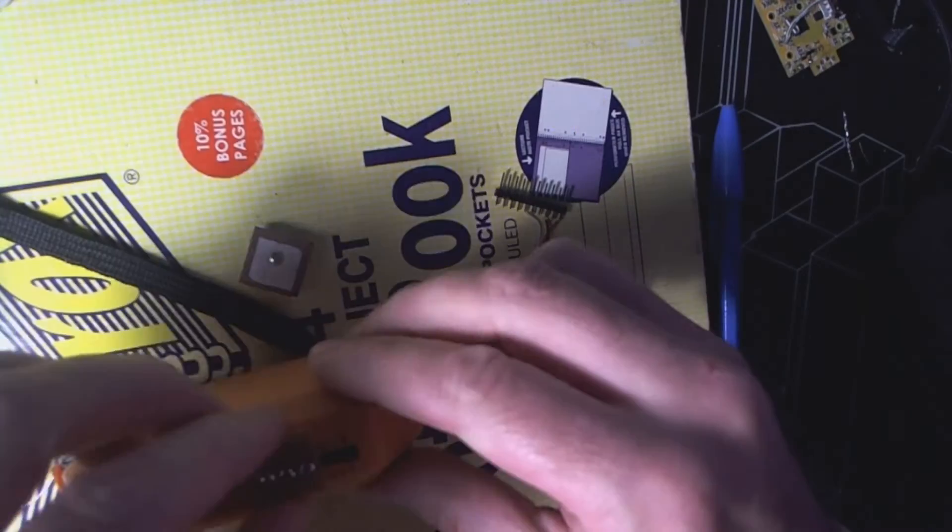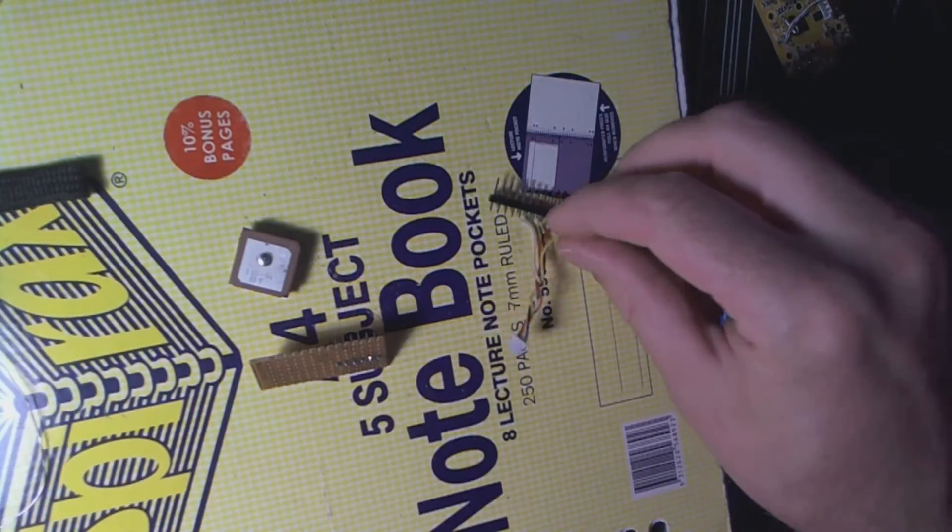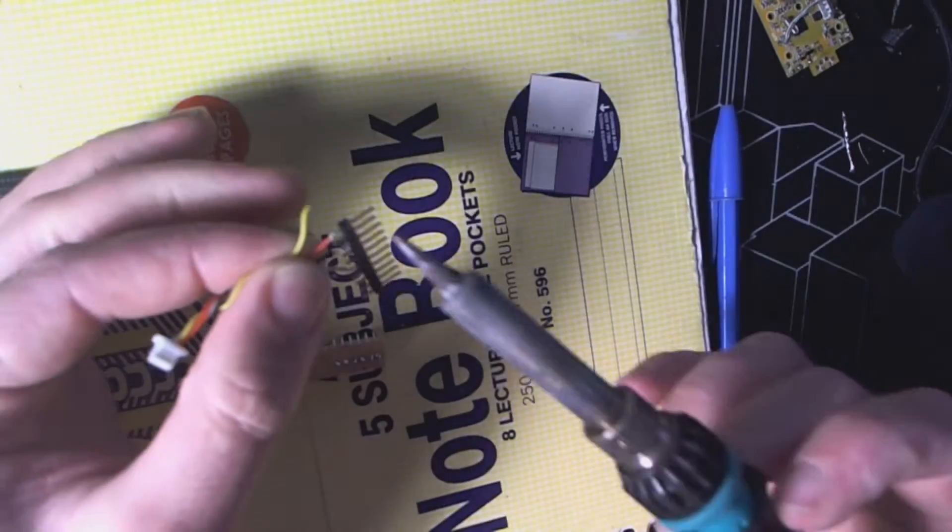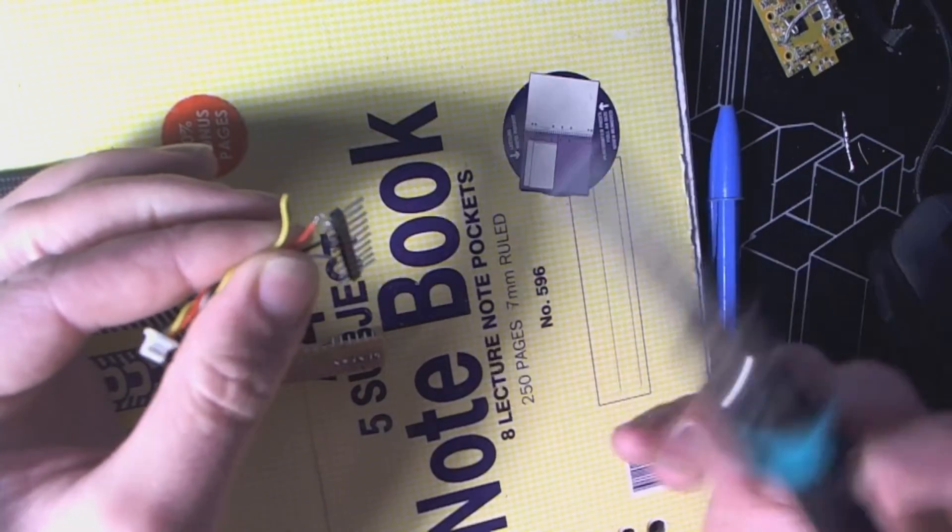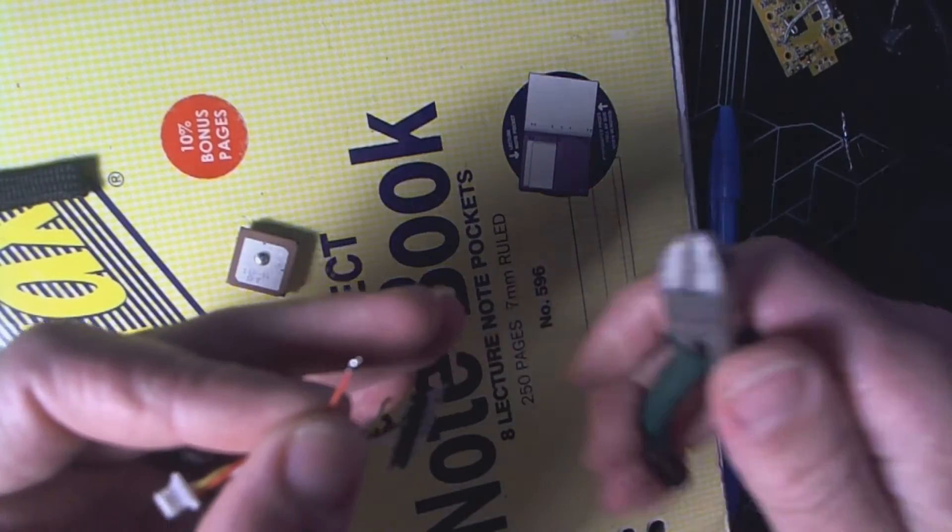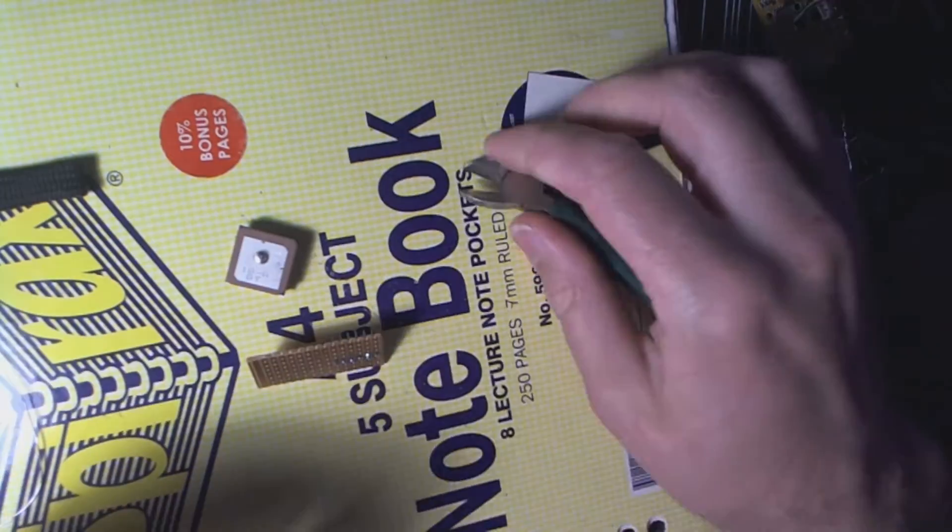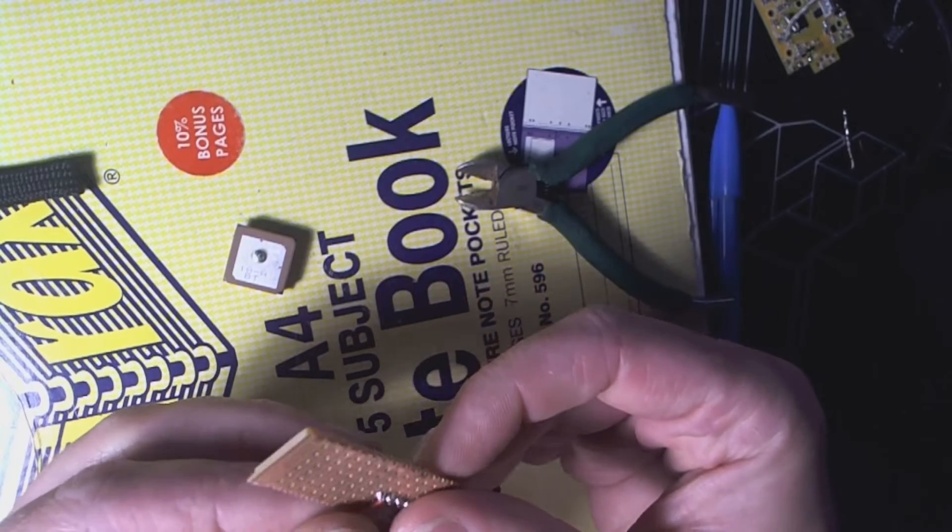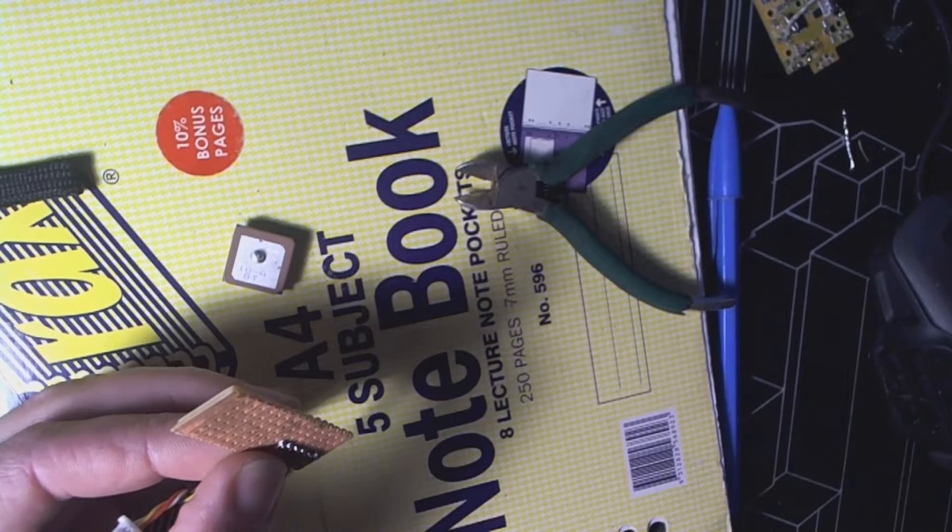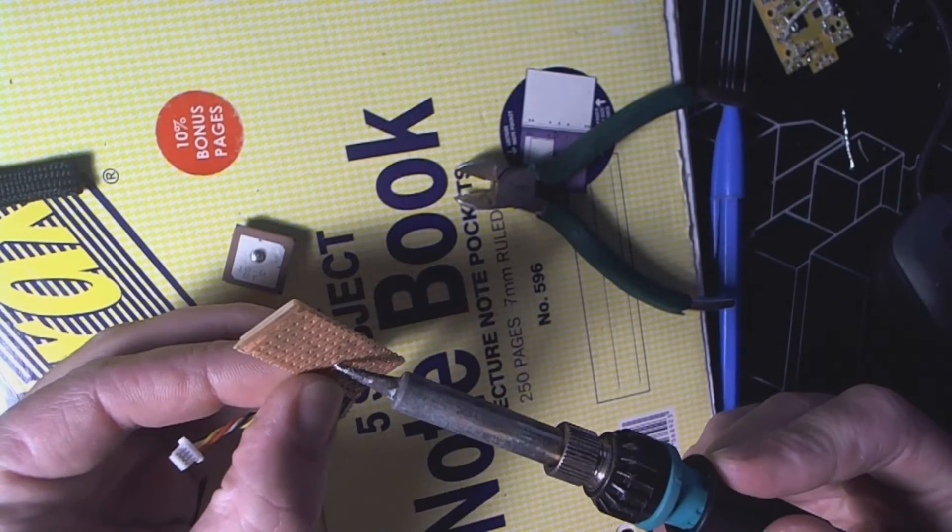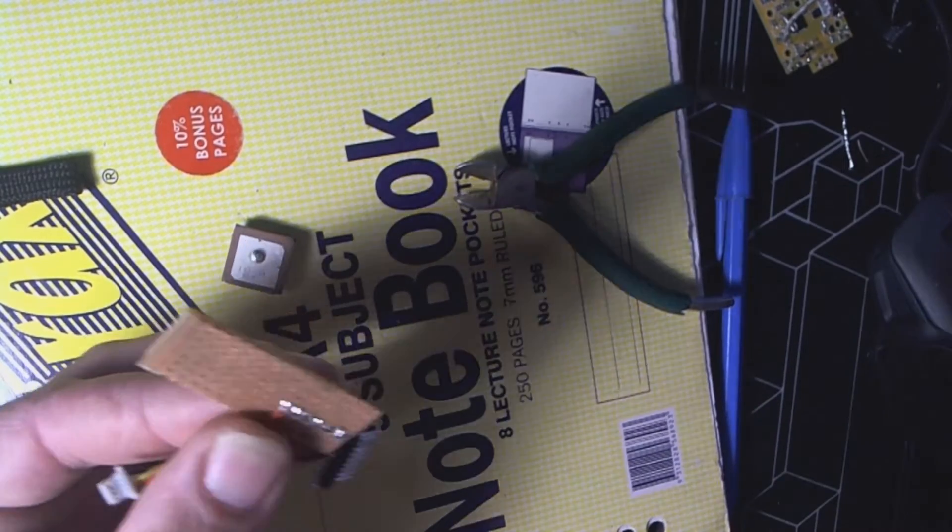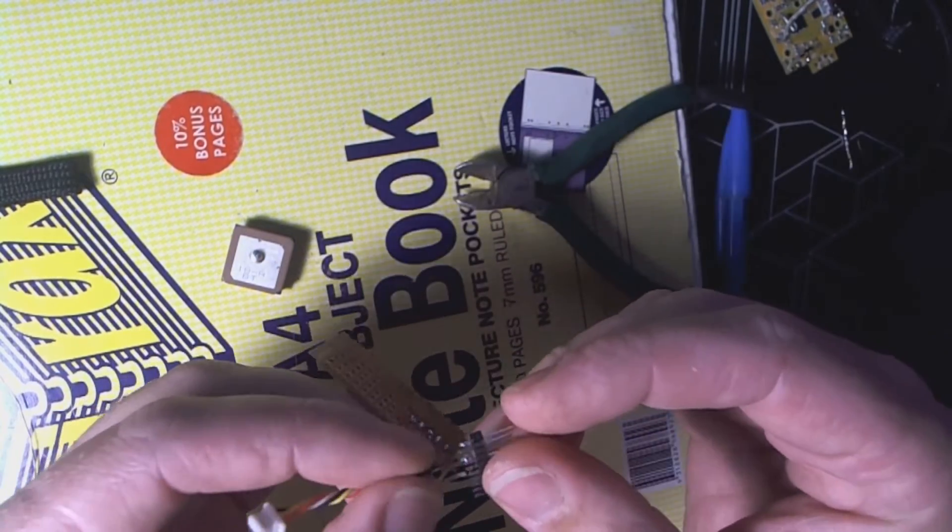So our red wire of course has to go to pin one here. Let's trim that wire a bit, a bit long. Pin one, and of course because everything is tinned, it's just a case of heating it up with the soldering iron and it's attached.